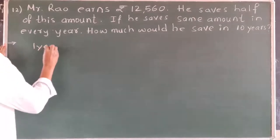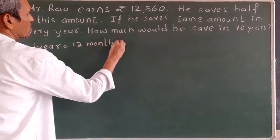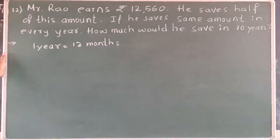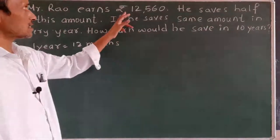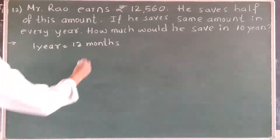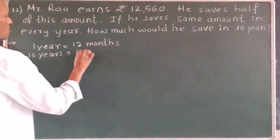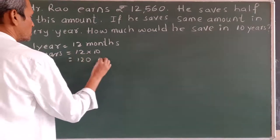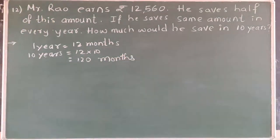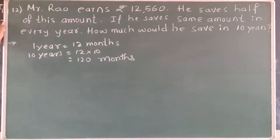One year is how much? 12 months. Because the time is given in years but the salary is given per month, so we should convert years into months. So 10 years means how much? 12 into 10 is 120 months. Now we have converted 10 years into months. So we will find the salary of each month.